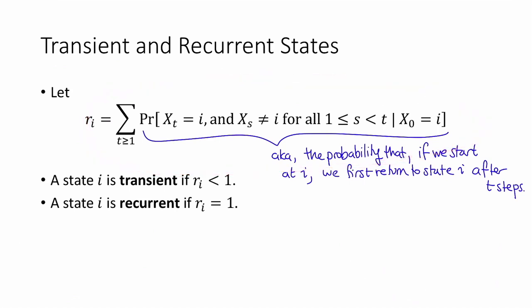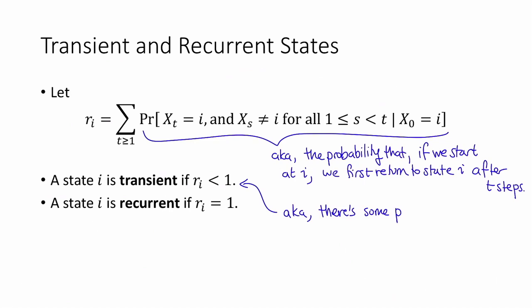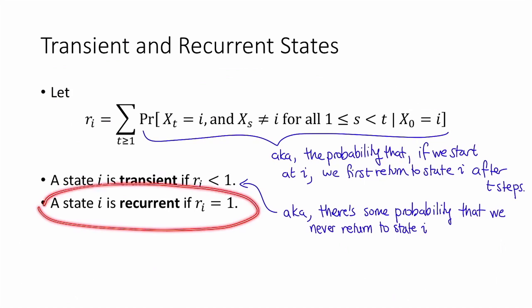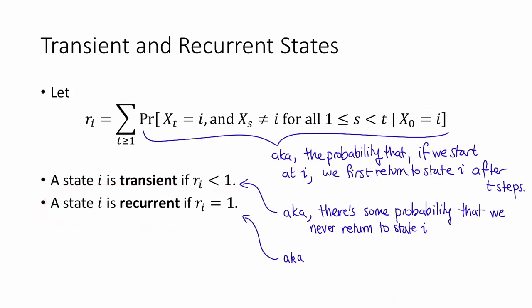Given this definition, we say that a state is transient if r sub i is strictly less than 1 — that is, if there's some probability that we will never return to that state. And we say that a state is recurrent if r sub i is equal to 1 — that is, the probability that we eventually return to that state is 1.